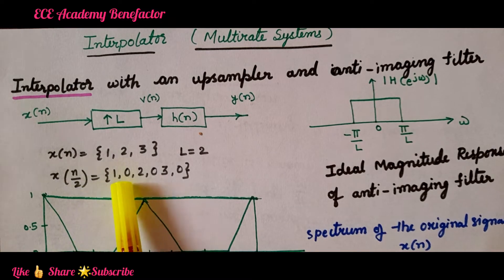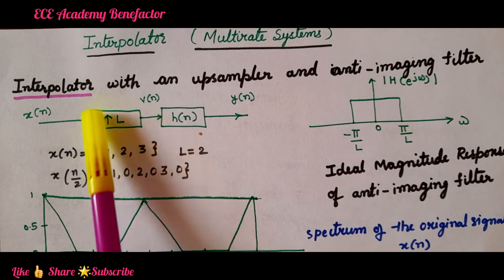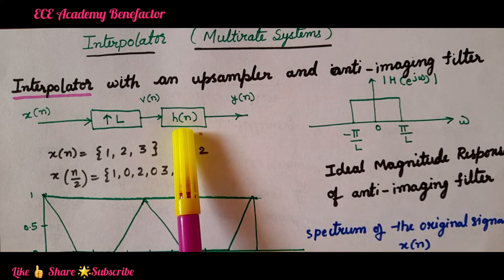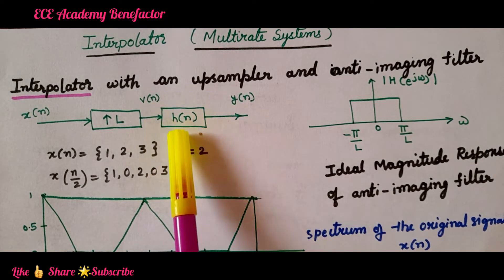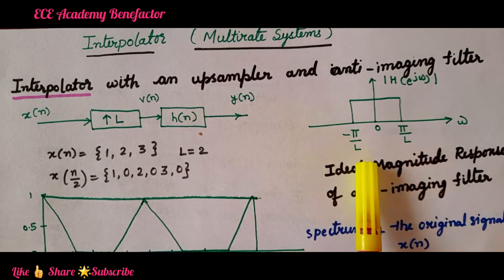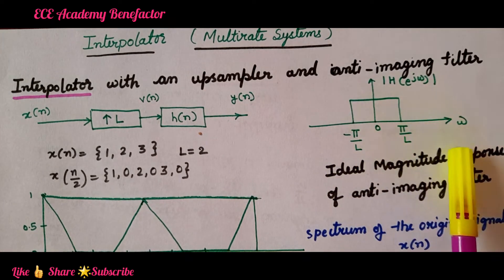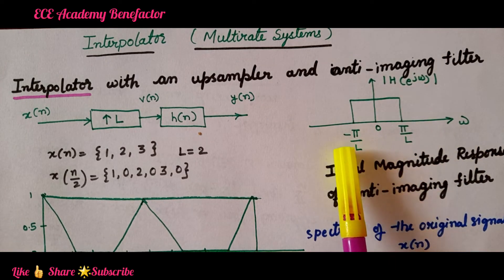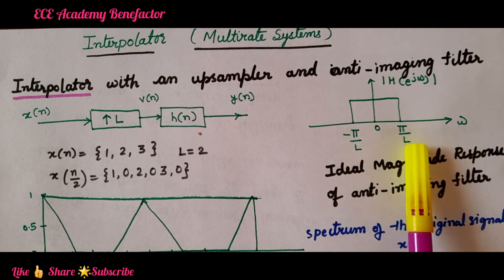This image spectrums are to be removed. After upsampling to remove this image spectrum we place anti-imaging filter. Its frequency response, the ideal frequency response of this anti-imaging filter is shown here: magnitude of H(e^jω) versus ω. Its magnitude response is limited between minus π/L to π/L.